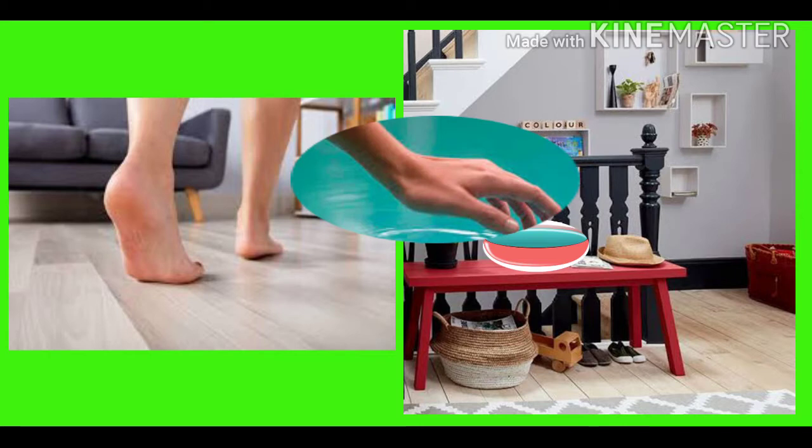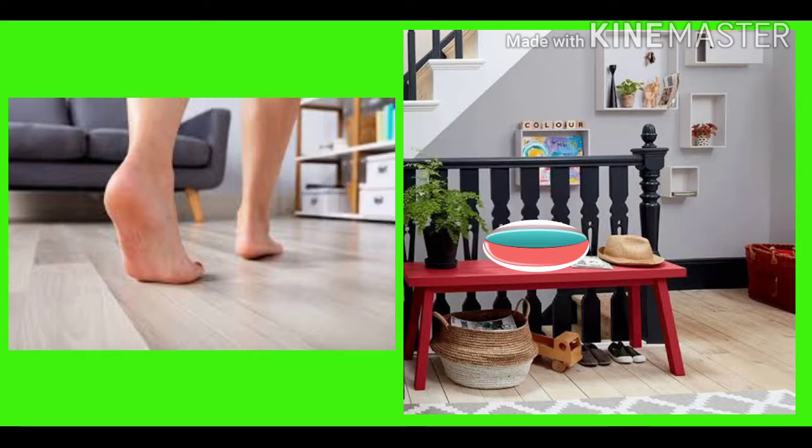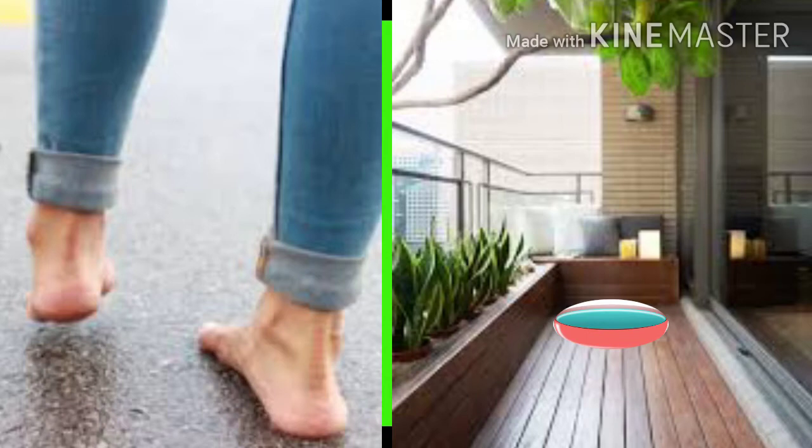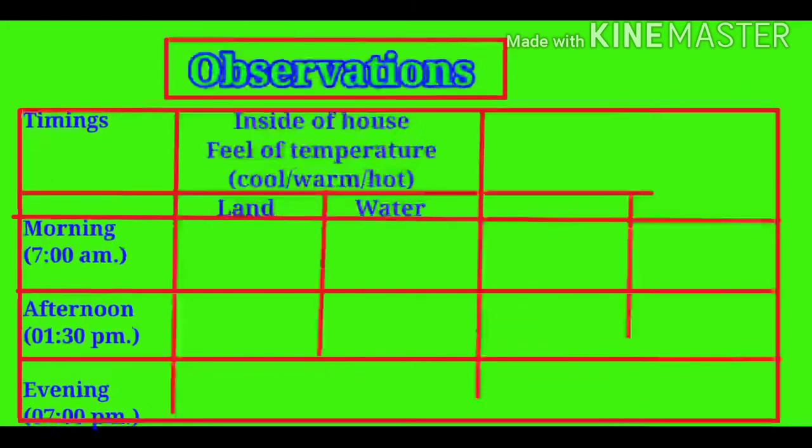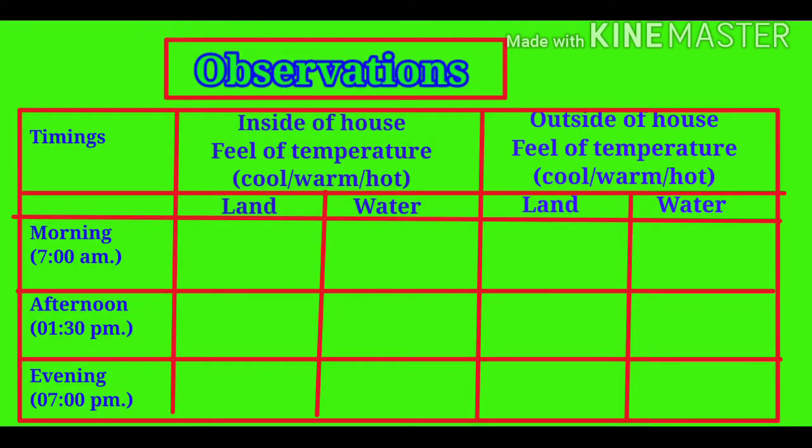In the afternoon, walk barefoot on the floor inside the house and feel the temperature of the floor. Feel the temperature of the water in the pot inside. Perform the same activity outside the house and get the feel of the temperature of land and water kept in the sun. Write down your observations about the temperatures of land and water. Do this again around 7 in the evening. Note your observations again.